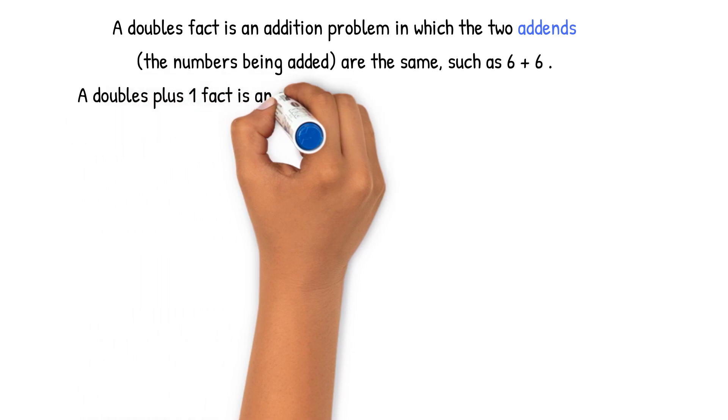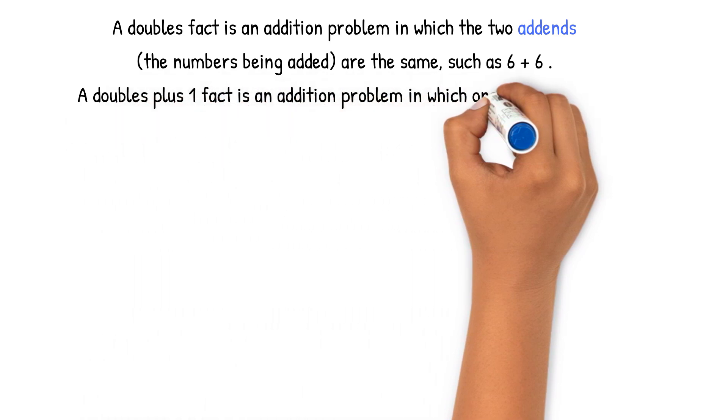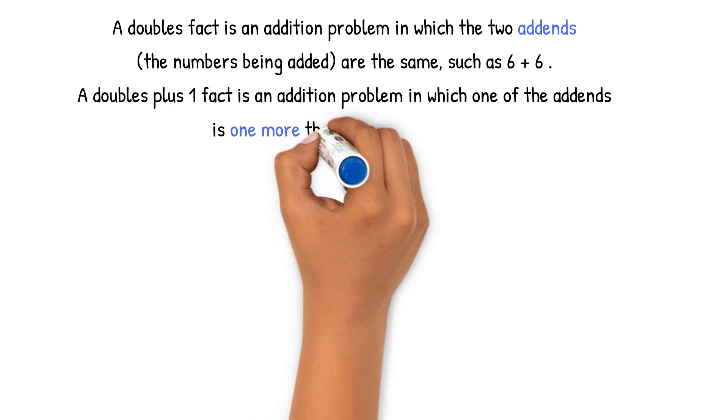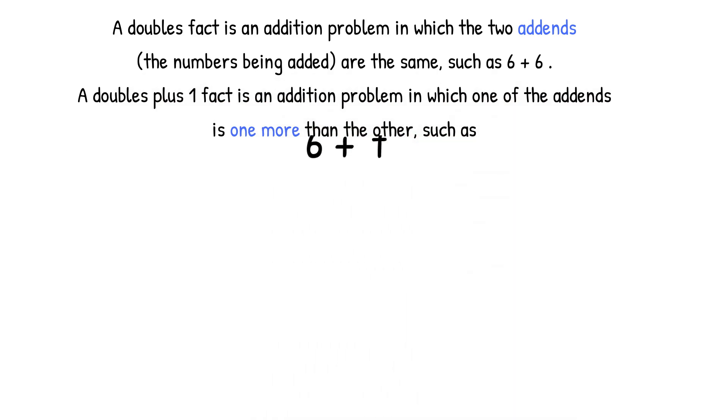A doubles plus one fact is an addition problem in which one of the addends is one more than the other, such as six plus seven. Think of seven as six plus one, so your new equation would be six plus six plus one.